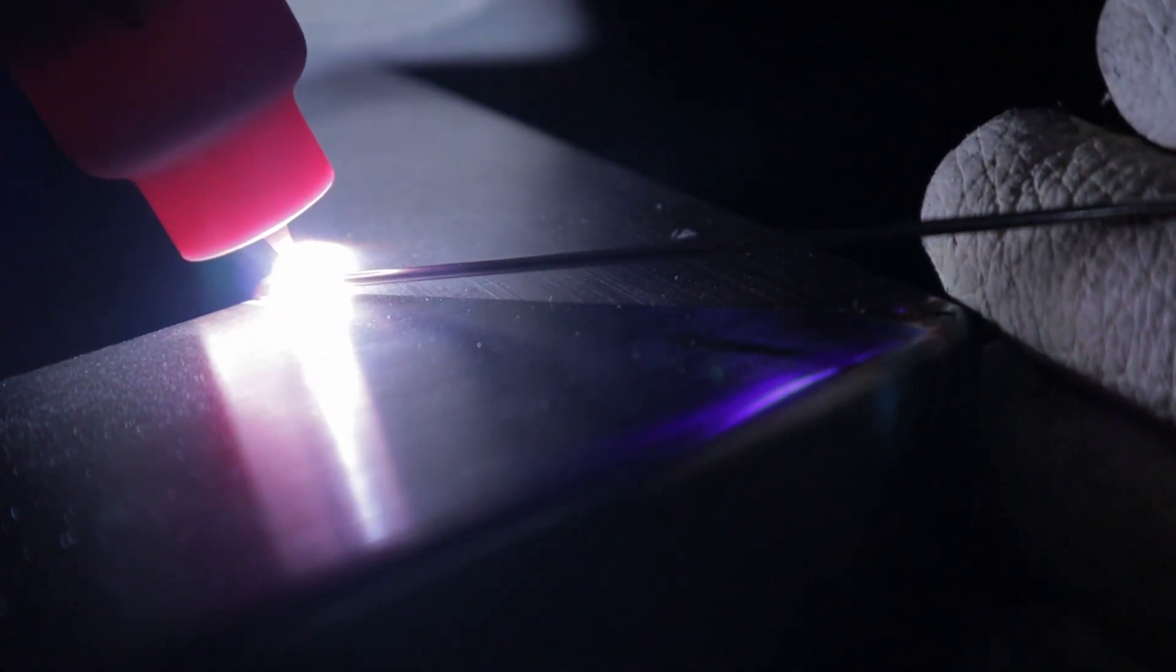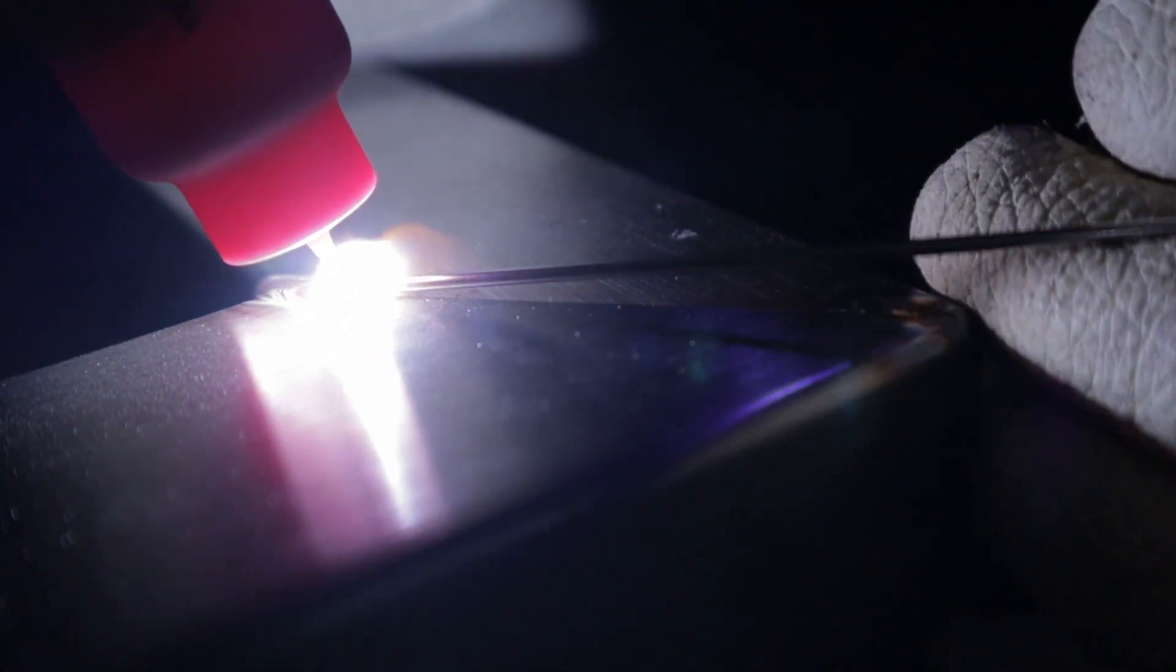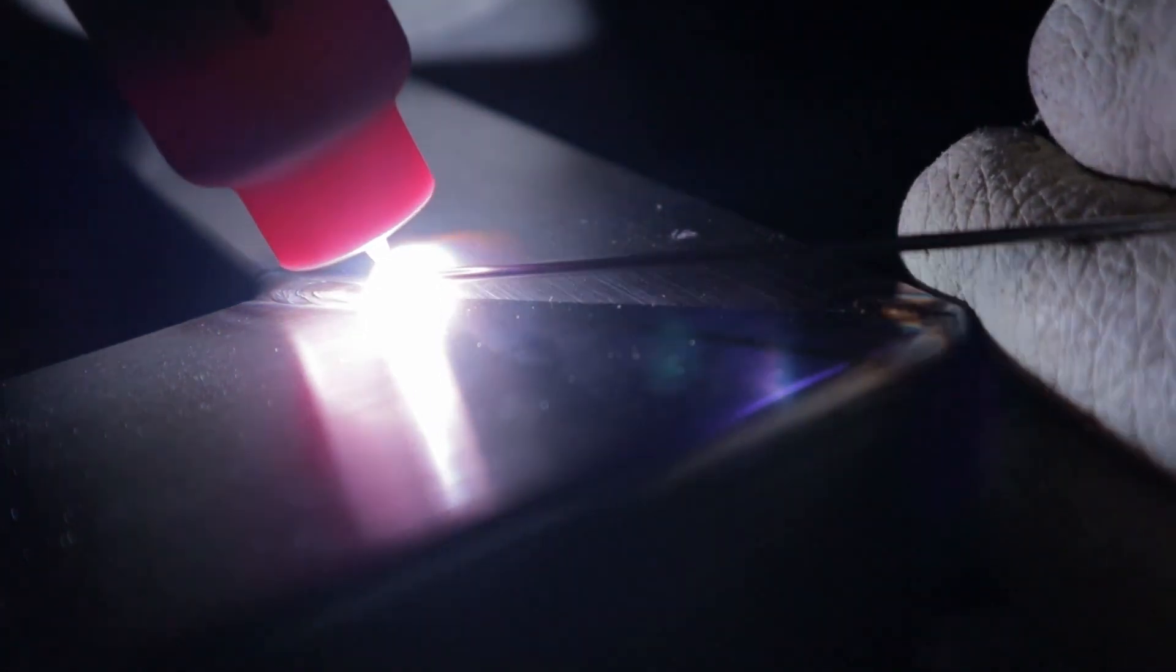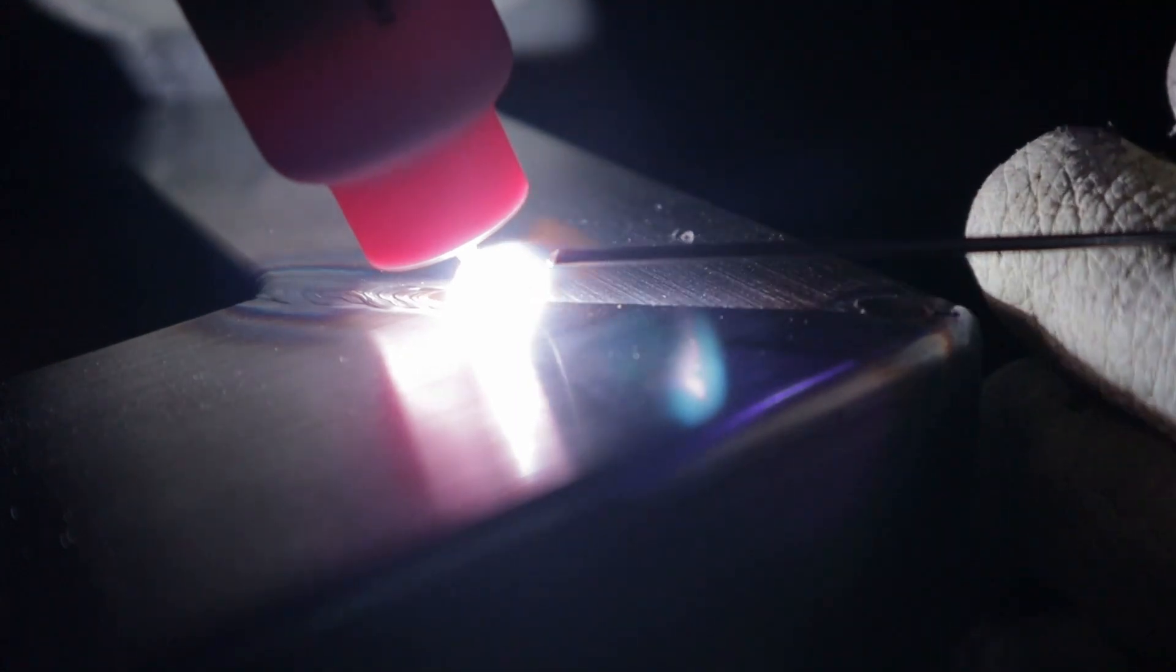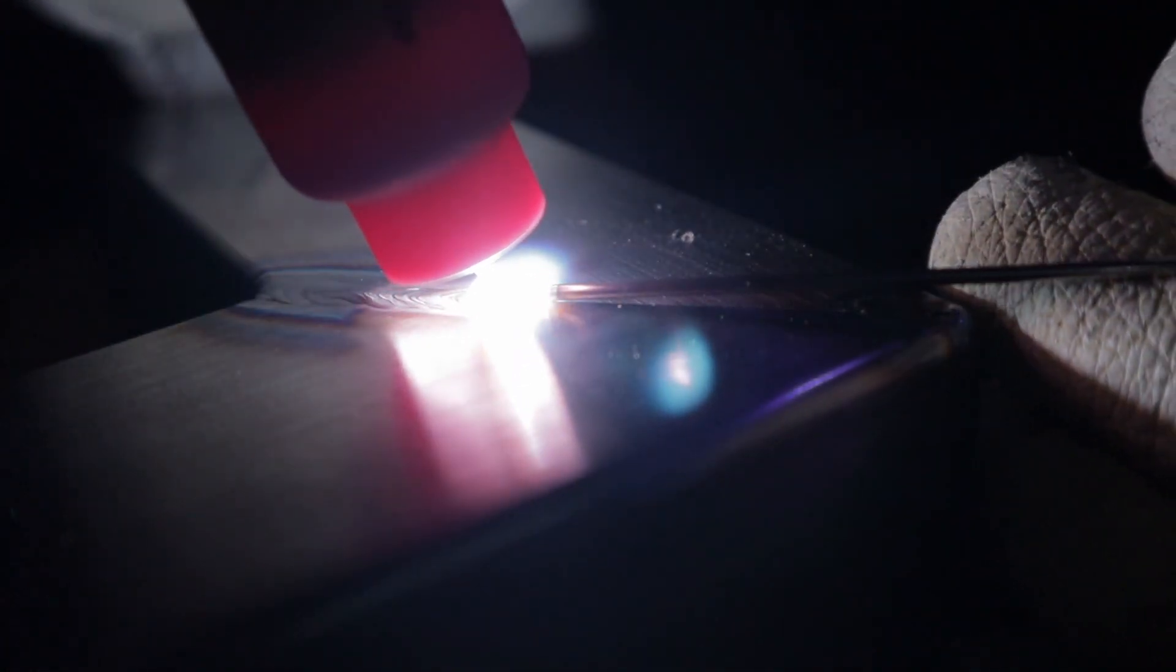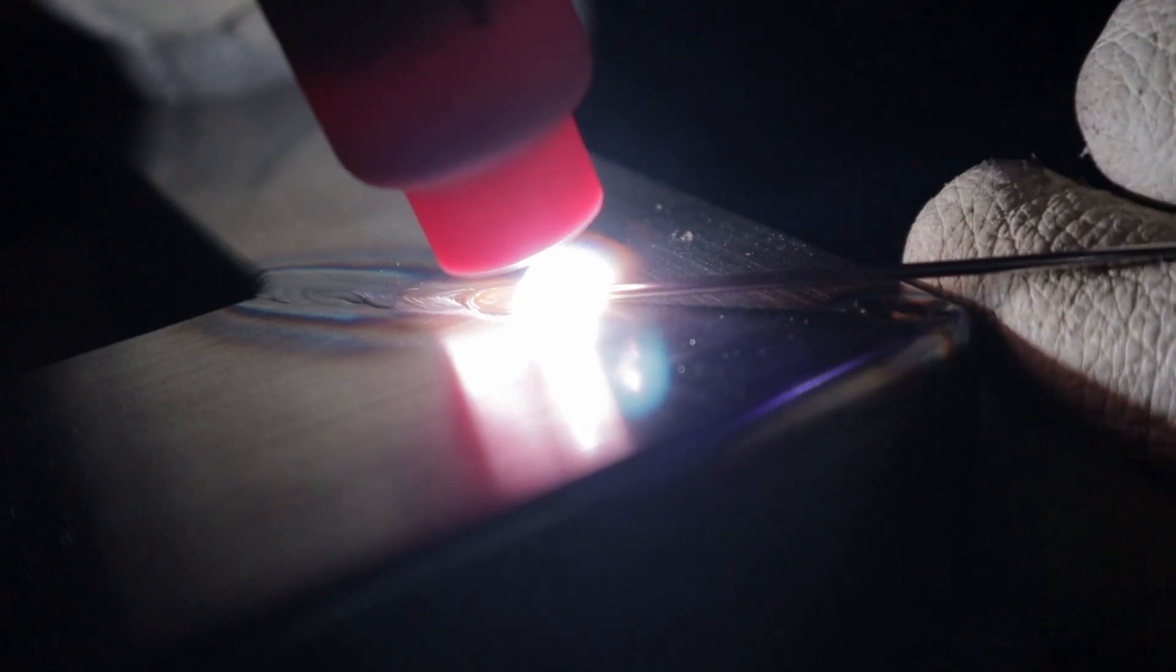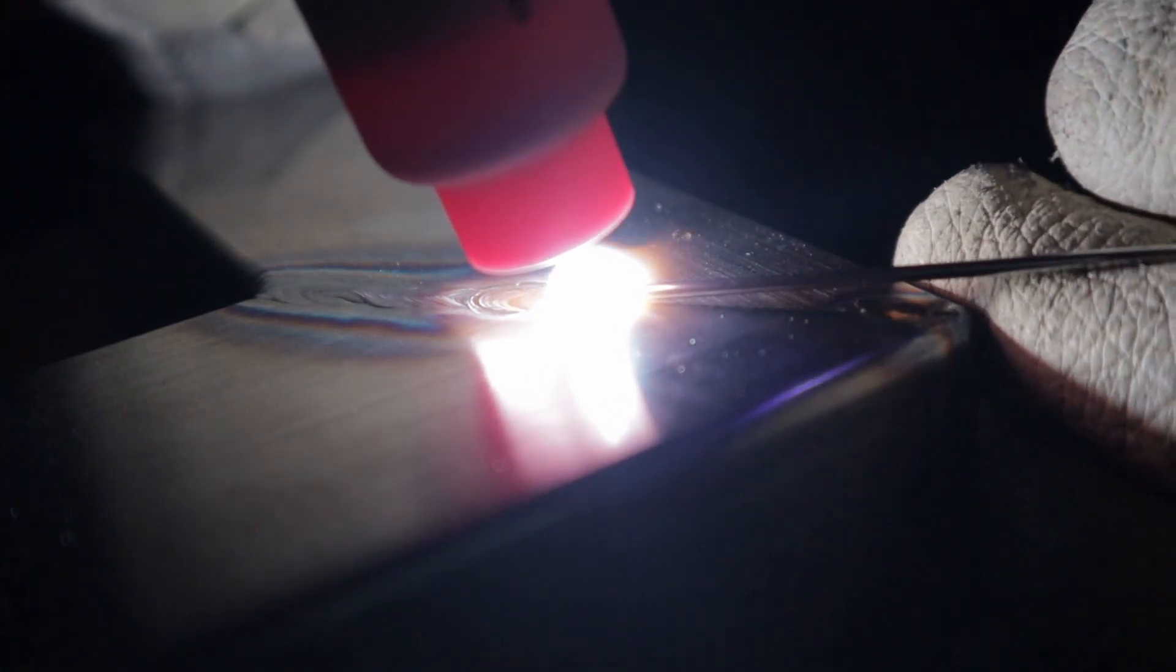In this example I have the welder set at 65 amps. My travel speed is a lot faster to prevent from blowing a hole in the parent material. If I accidentally get caught up on the bench or if I can't feed the wire through fast enough the weld pool sinks. It also distorts the material.